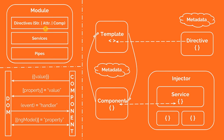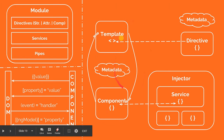An Angular application can contain a lot of modules, and each module can contain certain directives, services, pipes, and guards. On the right-hand side we have an actual interaction between all these key components — all these building blocks inside an Angular application.